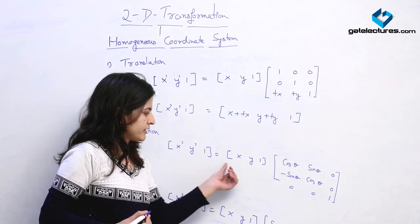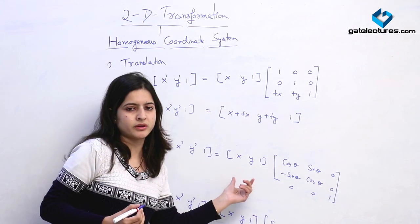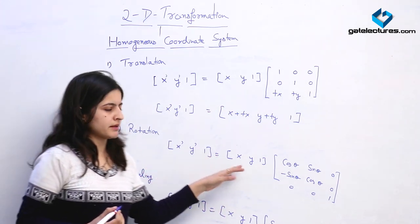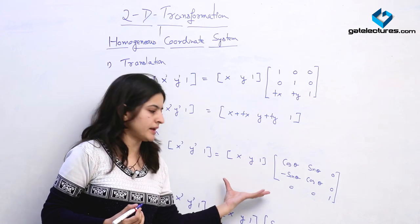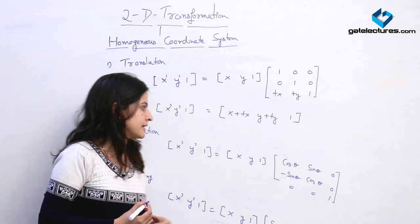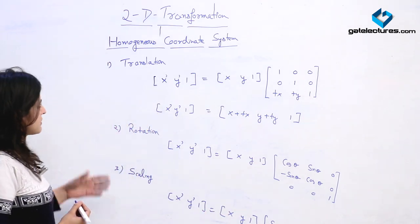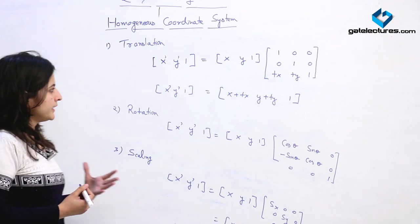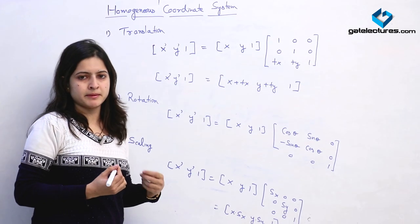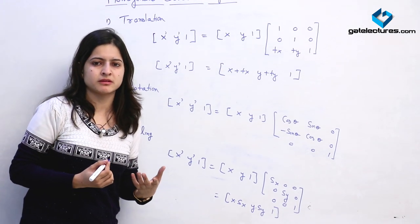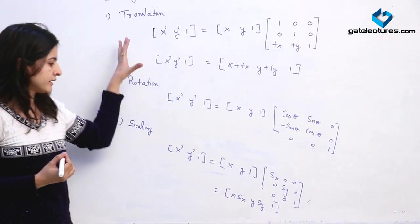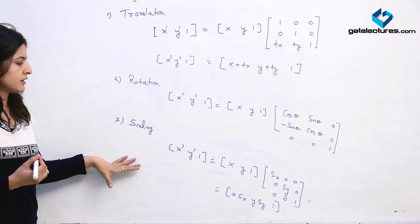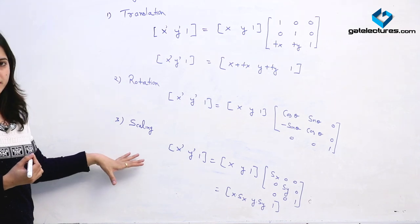I have not solved these in detail — you can directly apply matrix multiplication and solve them yourself. So this is the homogeneous coordinate system. We will now see some numerical examples in which we apply more than one operation and use this 3×3 matrix form.